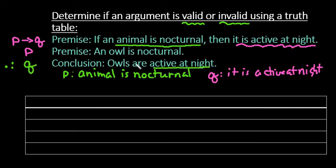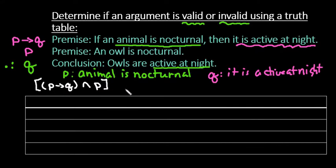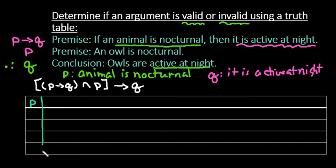Because 'active at night' is part of this statement here. So what we're going to do essentially is get to the final statement that if P, then Q, and P are both true. So if this part is true, then Q is true. This is what our final column should look like: if P then Q is true, and P is also true, then Q is going to be a true statement.